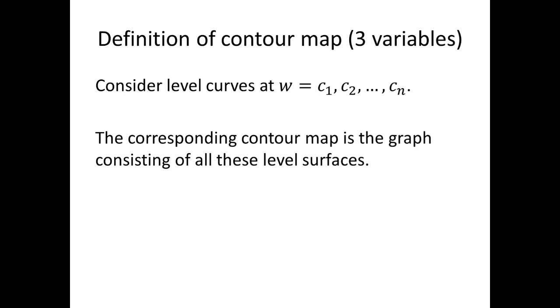And so, the definition of a contour map in three variables. We will consider level curves at w equals c₁, c₂, and so on up to cₙ. Then, the corresponding contour map is the graph consisting of all these level surfaces.